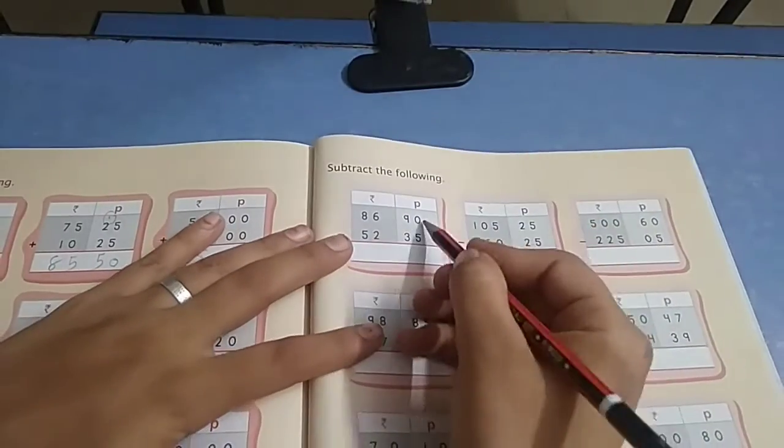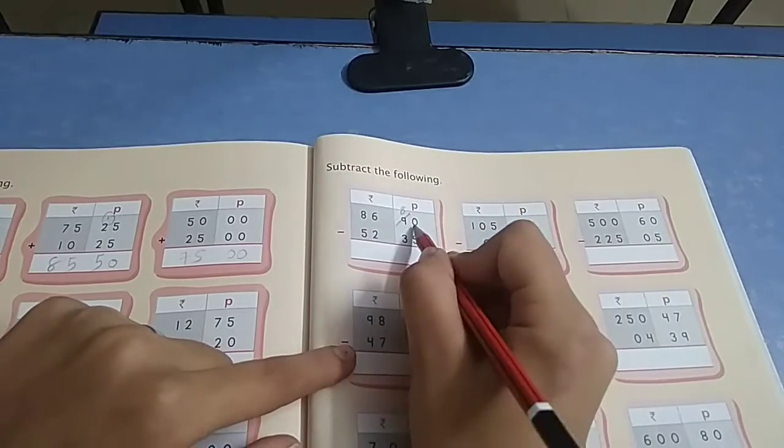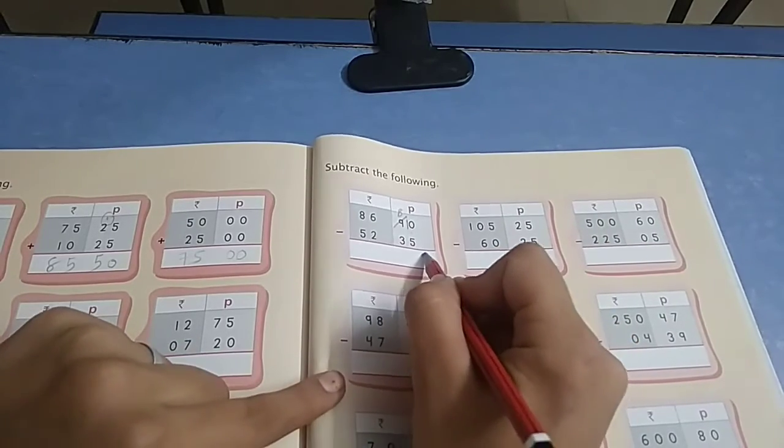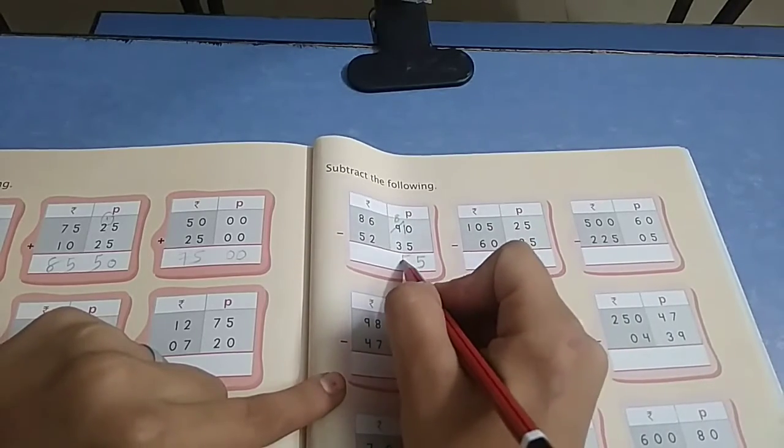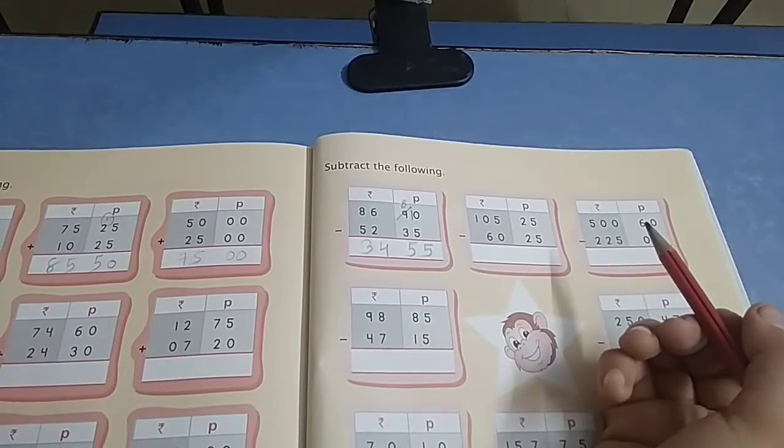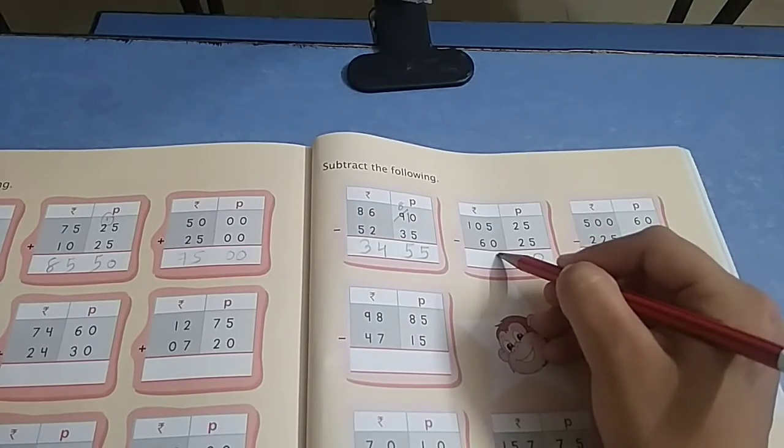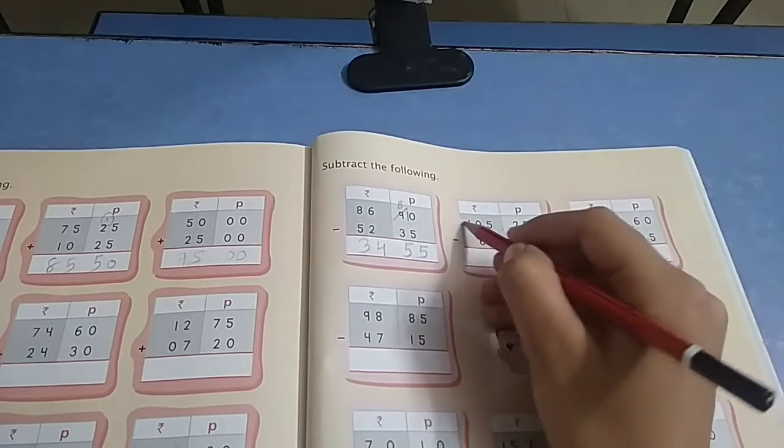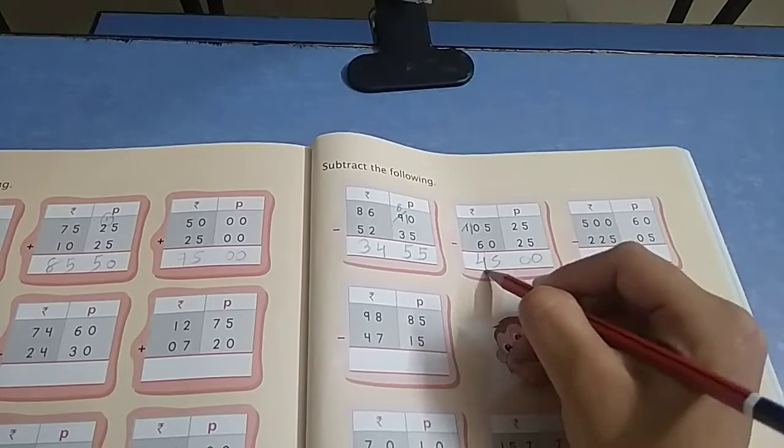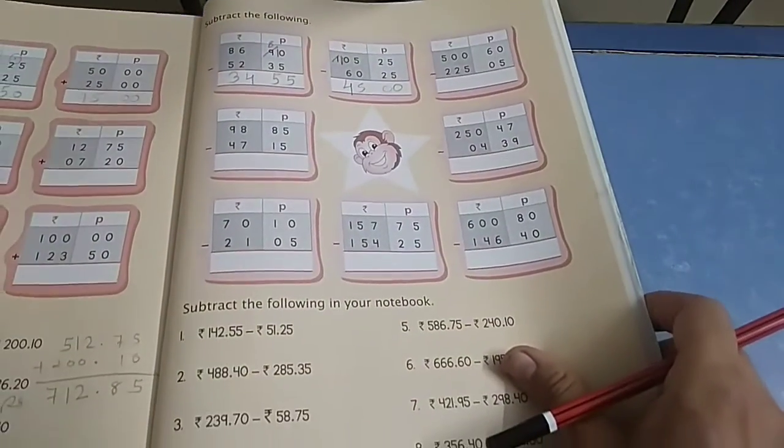Now the next is subtraction. 0 minus 5, we can't cut, so we have to borrow the amount. Borrow from 9, so write 8 here. The 6 becomes 10. 10 minus 5 is 5, 8 minus 3 is 5, 6 minus 2 is 4, 8 minus 5 is 3. That's 34 rupees 55 paise. Next: 5 minus 5 is 0, 2 minus 2 is 0, 5 minus 0 is 5. 0 minus 6, we have to borrow. Cut this and come here: 10. 10 minus 6 is 4. That's 44 rupees 0 paise.